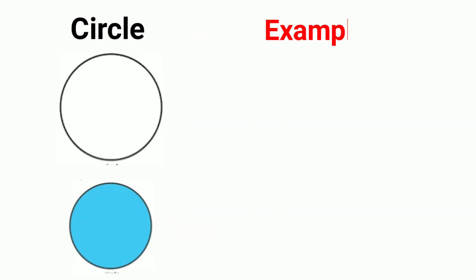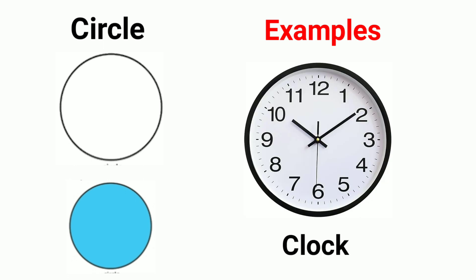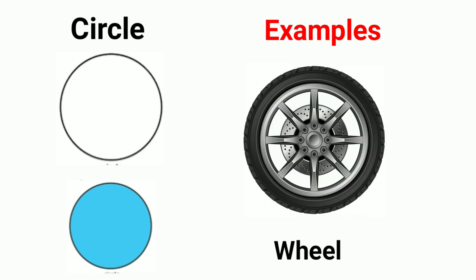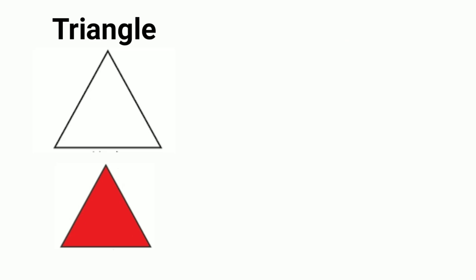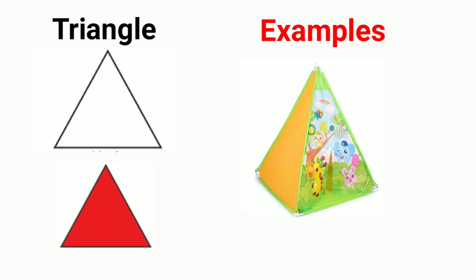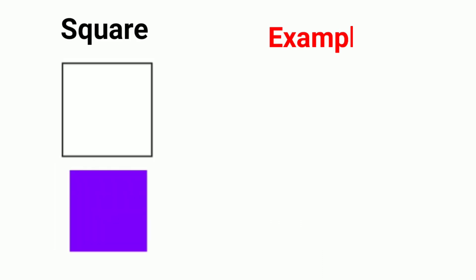Examples of circle shapes: clock, wheel, dartboard. Triangle. Examples of triangle shapes: watermelon slice, tent, pizza slice. Square examples.